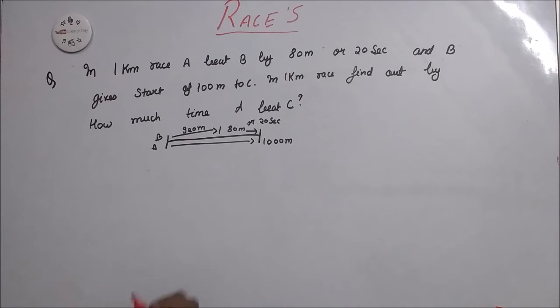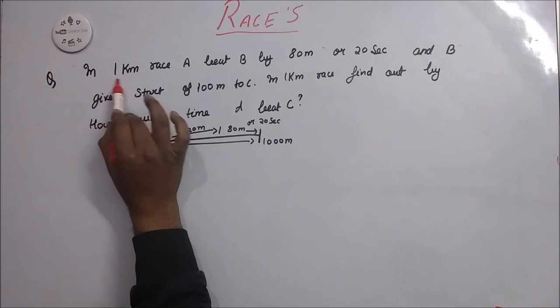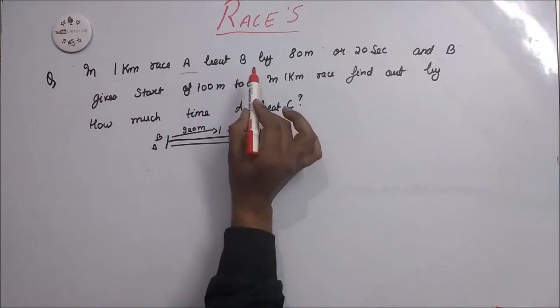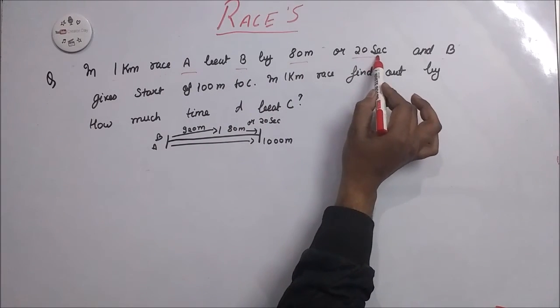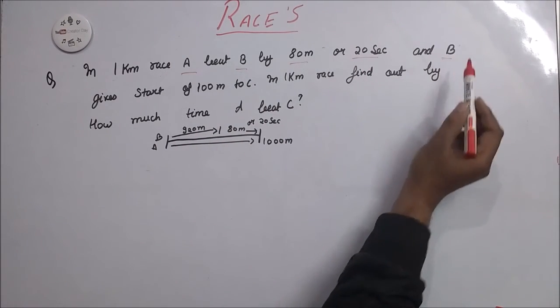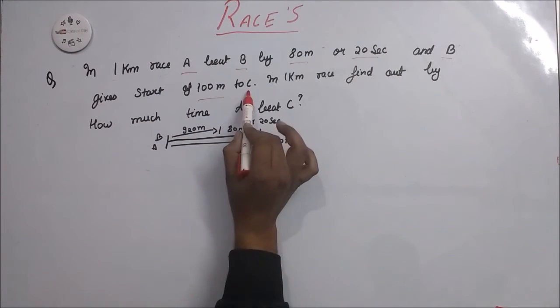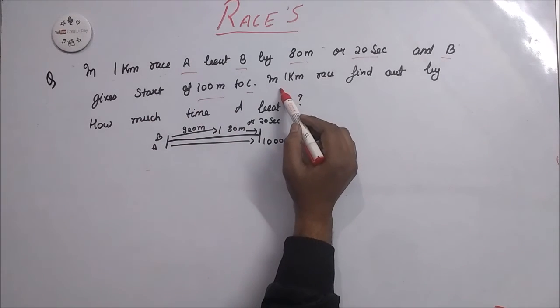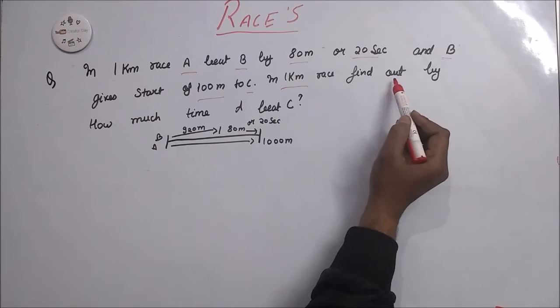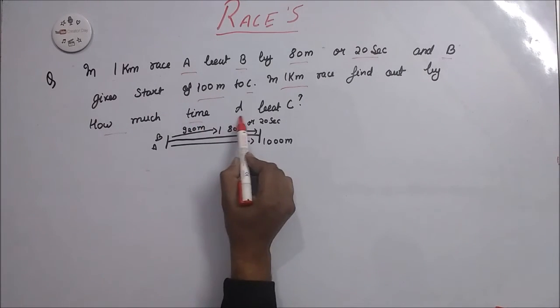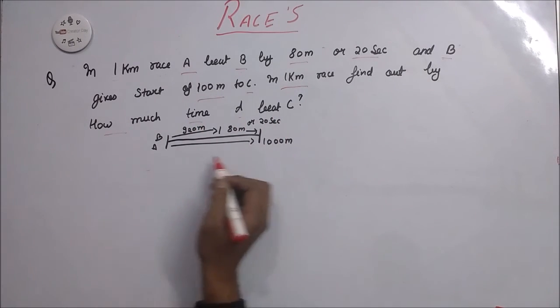Now here is the question. In a 1 kilometer race A beat B by 80 meters or 20 seconds. And B gives start of 100 meters to C. In a 1 kilometer race, find out by how much time A beats C. Here is the diagram.